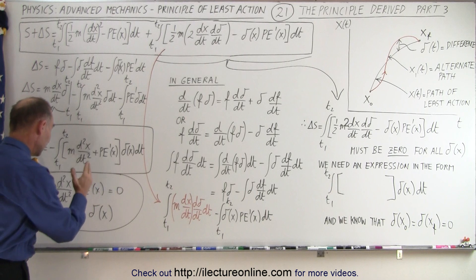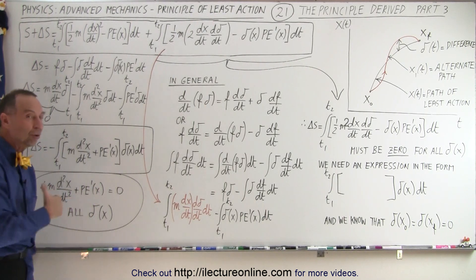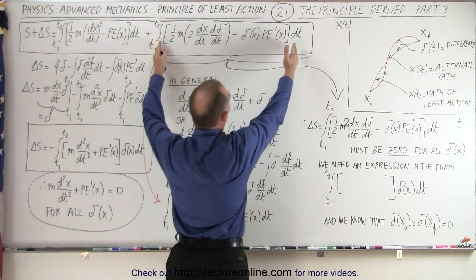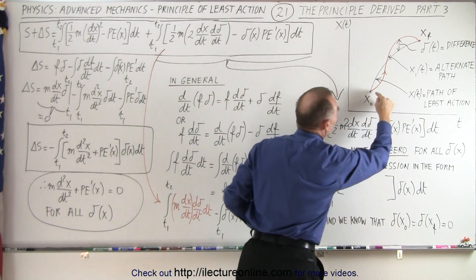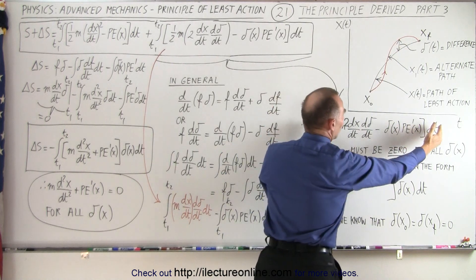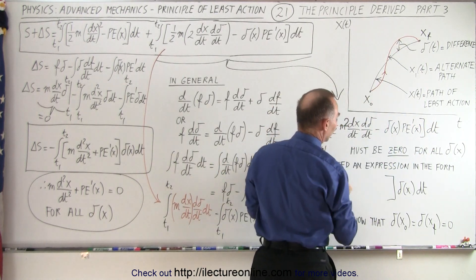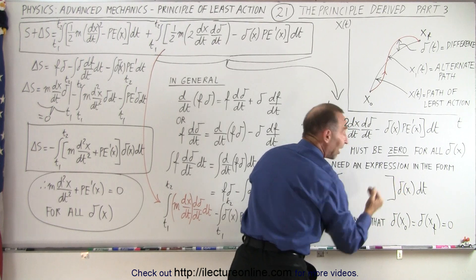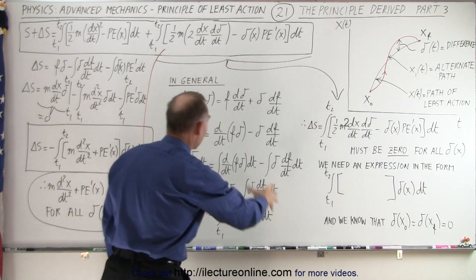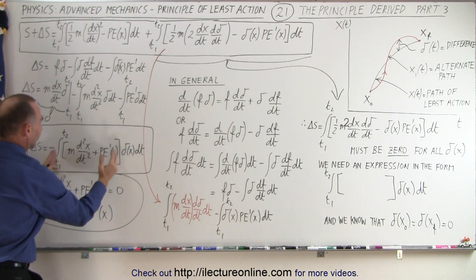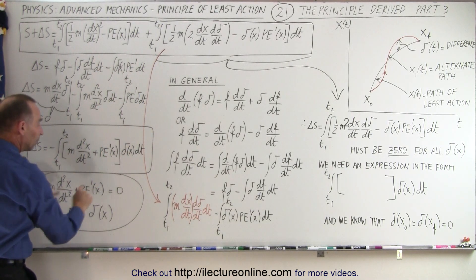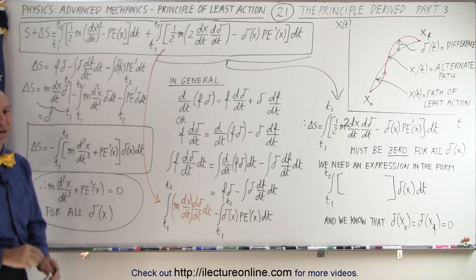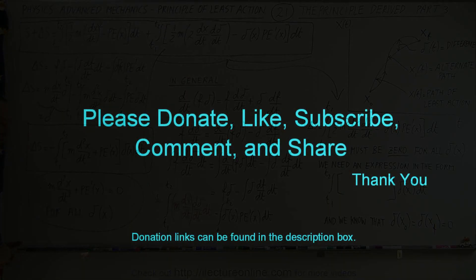On the next video, we'll make the connection between this and the Lagrangian, and why the path of least action really works. Mathematically, we took delta S — the additional action from diverging from the path of least action — and expressed it as an integral. By manipulating through a couple of mathematical tricks, we now have it in the form where the expression inside the brackets must equal zero for the path of least action. The next video will give us additional detail on what that actually means.